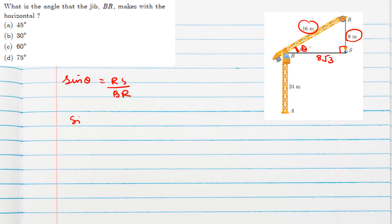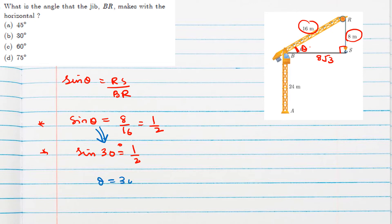Sine theta equals 8 divided by 16, which is 1 by 2. Since sine 30° equals 1/2, comparing the two expressions we get theta equals 30 degrees. So option B is the correct answer.